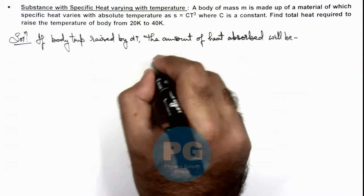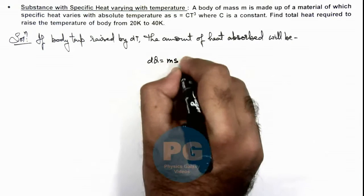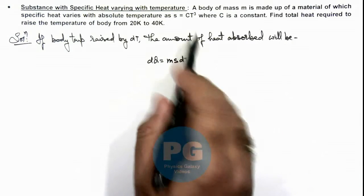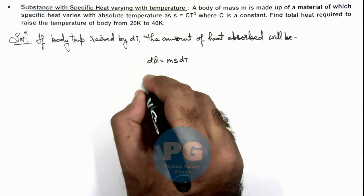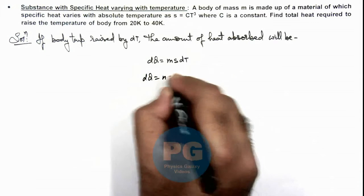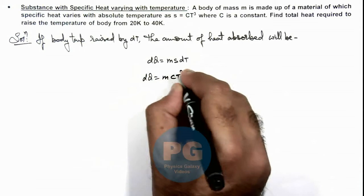This can be written as dq = m·s·dT. As specific heat is varying with temperature we can write this dq as m·c·T³·dT.